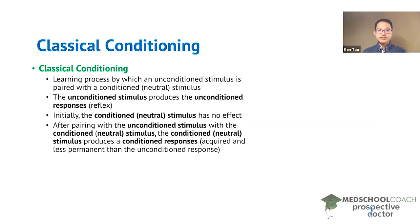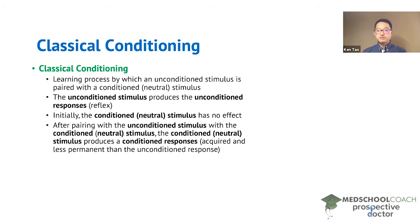Next, we can talk about the conditioned or neutral stimulus. This is a stimulus that has no effect on the animal — that's why it's called neutral. It's not a good thing, it's not a bad thing; it has no effect on the animal. What the researchers will do is pair the unconditioned stimulus with the conditioned or neutral stimulus. Over multiple pairings, they find that by presenting the conditioned or neutral stimulus alone, they are able to produce a conditioned response. The conditioned response has to be learned, so we see that it is acquired through classical conditioning.